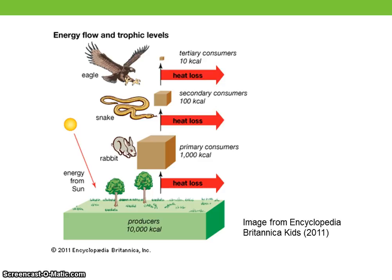In this image, we see the autotrophs or primary producers at the bottom of the diagram, followed by heterotrophs. The rabbit is labeled the primary consumer, followed by the snake as a secondary consumer and the eagle as the tertiary consumer. Sometimes we instead refer to the rabbit as an herbivore and the snake and eagle as carnivores. A species that consumes both plant matter and animals would be termed an omnivore.